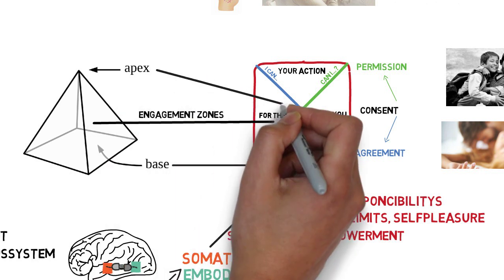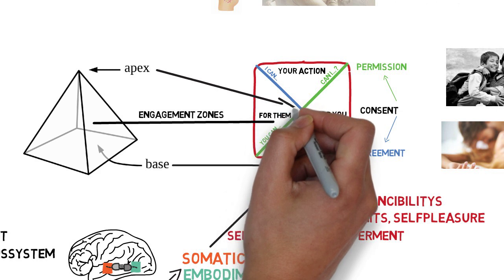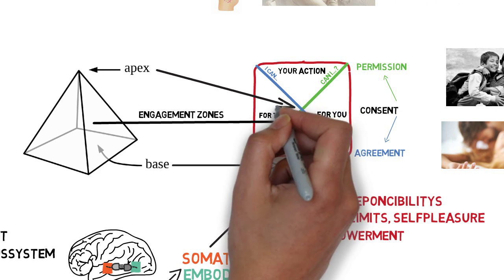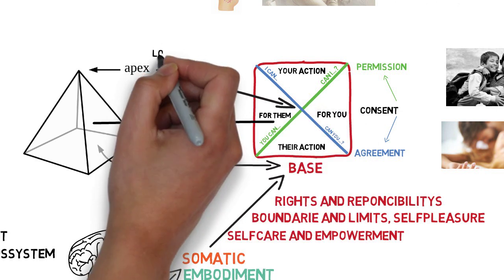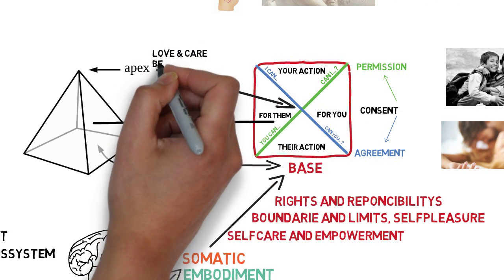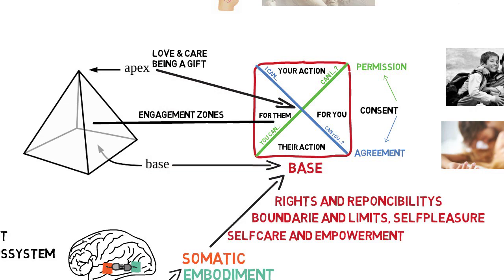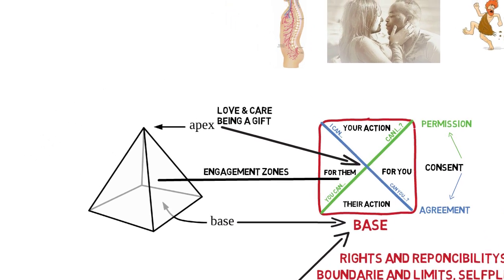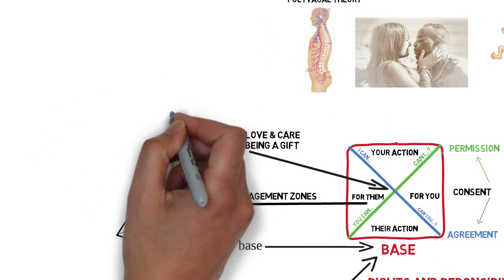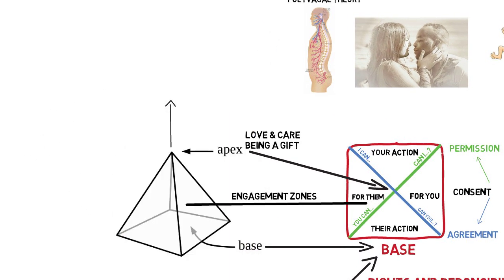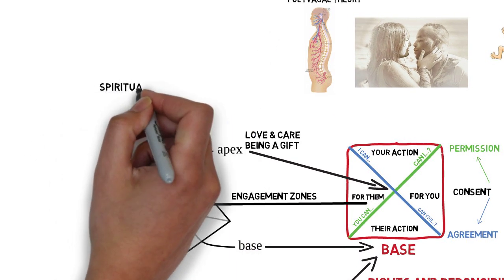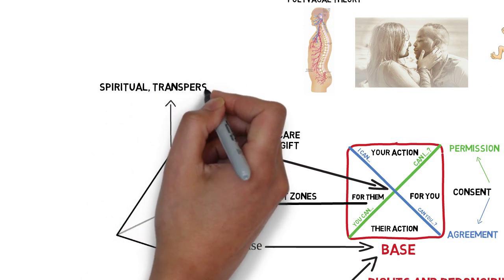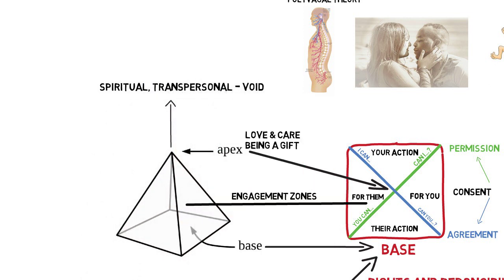At the top of the pyramid — the apex — we develop love and care that is offered unconditional as a gift to and from the world around us. And we merge into spiritual and transpersonal void beyond any concepts of duality.